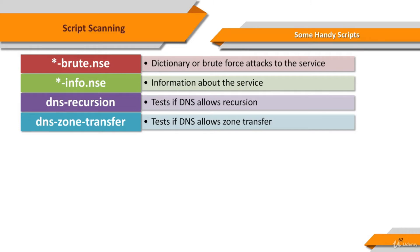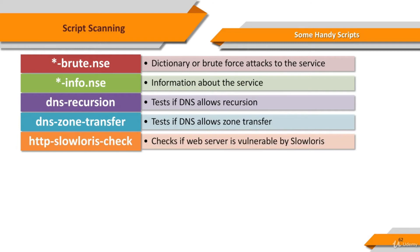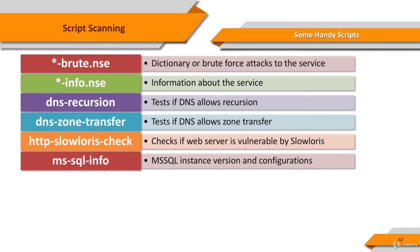Type-specific data such as A, MX, NS, and PTR records. HTTP Slowloris check tests a web server for vulnerability to the Slowloris denial-of-service attack without actually launching a DOS attack. MS SQL info attempts to determine configuration and version information for Microsoft SQL Server instances.